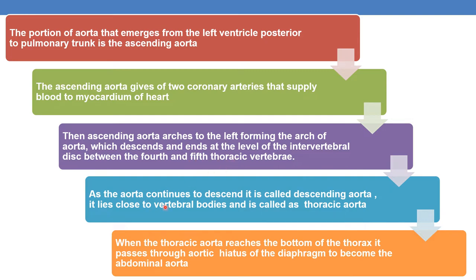As the aorta continues to descend, it is called the descending aorta and it lies close to the vertebral bodies, especially the fourth and fifth — hence the name thoracic aorta. When the thoracic aorta reaches the bottom of the thorax, it passes through the aortic hiatus of the diaphragm to become the abdominal aorta.